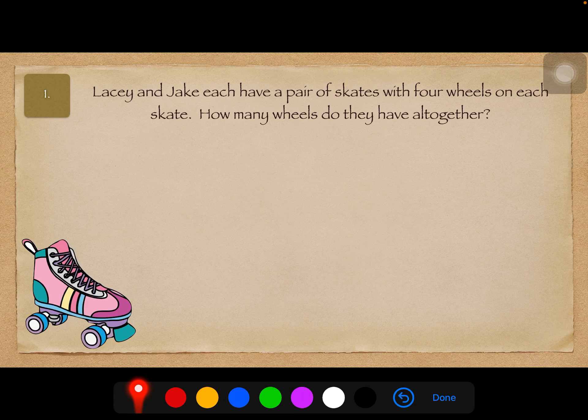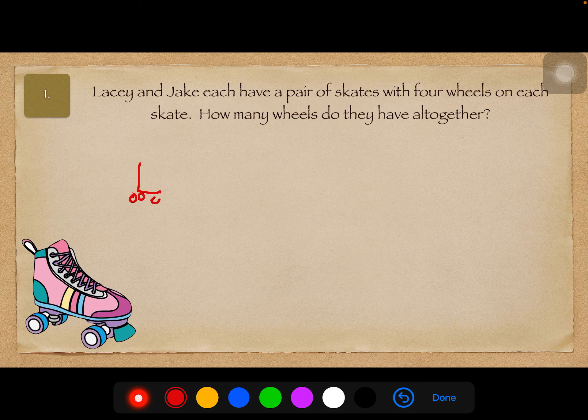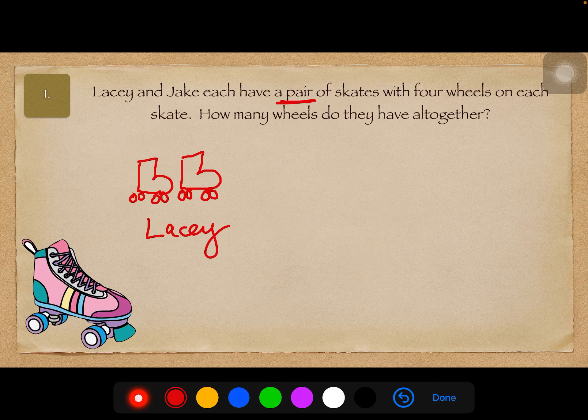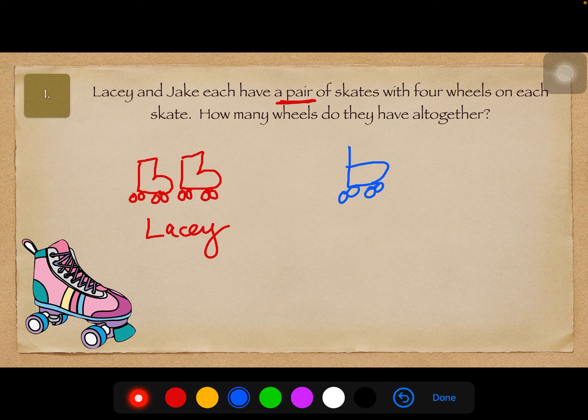Alright, so if we look at, let's pretend this is Lacey's skate number 1, 2, 3, 4, but they each have a pair. So a pair are two. I've got to make these look more like skates, there we go. Alright, so this is Lacey's, and then this is going to be Jake's. Jake's are a little rough looking, sorry Jake.